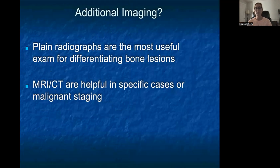When it comes to bone lesions, the most useful exam is actually plain radiographs for helping to differentiate benign from malignant lesions. MRIs and CT scans may be helpful in specific cases or if you are planning malignant staging or a surgical procedure.